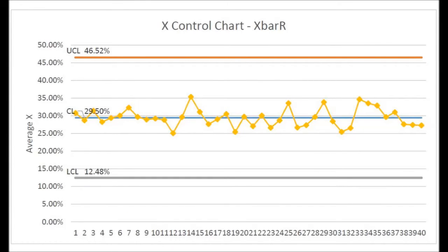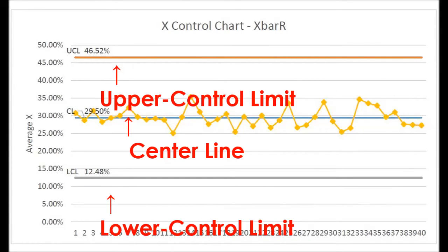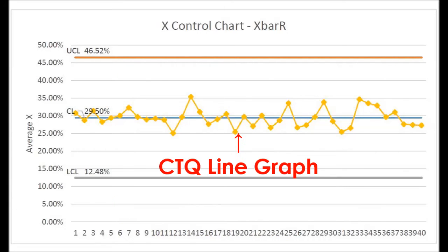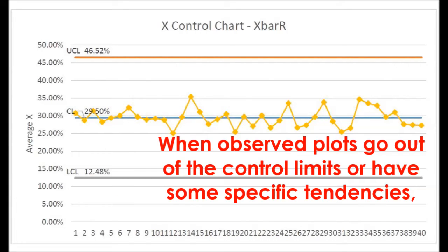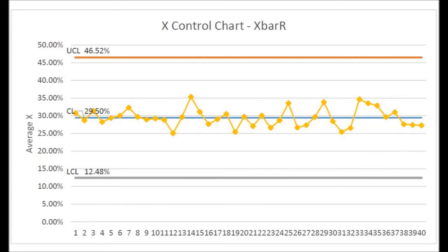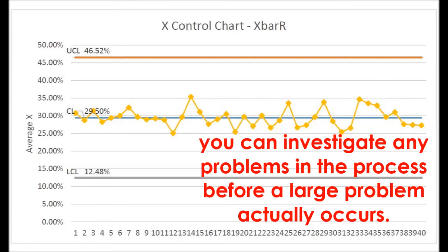This is a control chart. It has three straight lines of center, upper control limit, and lower control limit on a line graph. When observed plots go out of the control limits or have some specific tendencies, you can see that there were special cause variation and investigate any problems in the process before a large problem actually occurs.